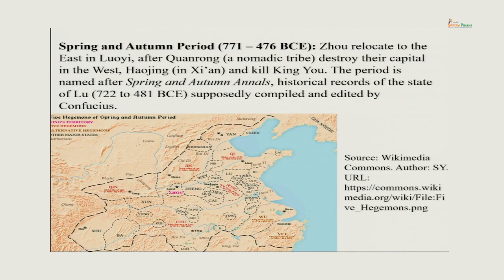The Spring and Autumn period starts in 771 BCE. This was when the Zhou dynasty was nominally the ruler of China. In 771, the capital of the Zhou dynasty, Hao Qing, was attacked by a nomadic tribe, Chuan Rong, and they destroyed the capital and killed King You. As a result, the Zhou had to shift their capital eastward — Hao Qing is around Xi'an today. The period before 771 is called the Western Zhou period, and the period after 771 is known as the Eastern Zhou period, which marks the beginning of the Spring and Autumn period.